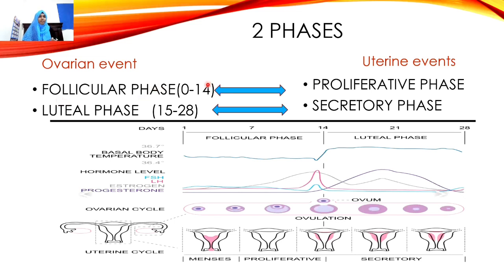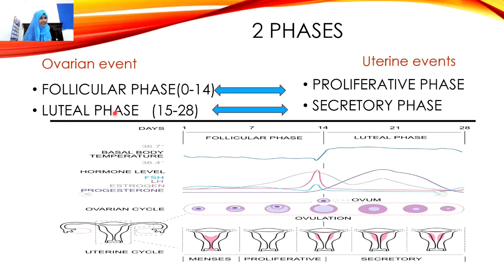The follicular phase takes place from day zero (first day of menses) to day 14, with the proliferatory phase occurring simultaneously in the uterus. On day 14 exactly, ovulation occurs — the release of the matured ovum or oocyte. From day 15 to day 28, the luteal phase takes place in the ovary and the secretory phase takes place in the uterus.